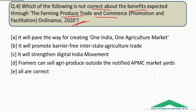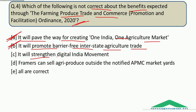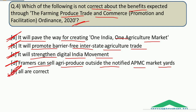The question asked which of the following is not correct about the Farming Produce Trade and Commerce Ordinance 2020. Option A — it will pave the way for creating one India one agriculture market — is correct. Option B — it will promote barrier-free interstate agricultural trade — is correct. Option C — it will strengthen the Digital India movement — is correct. Option D — farmers can sell agri produce outside the notified APMC market yard — is correct. Therefore the correct answer is Option E: all are correct.